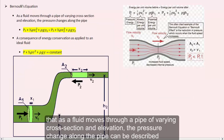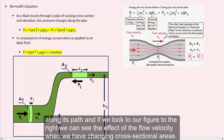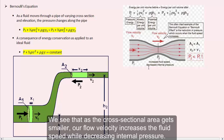Bernoulli stated that as a fluid moves through a pipe of varying cross-section and elevation, the pressure change along the pipe can be described by Bernoulli's equation. Through Bernoulli's equation, we will see that an ideal fluid's energy is conserved along its path. Looking at the figure to the right, we can see the effect of flow velocity with changing cross-sectional areas — as the cross-sectional area gets smaller, the flow velocity increases while the internal pressure decreases.